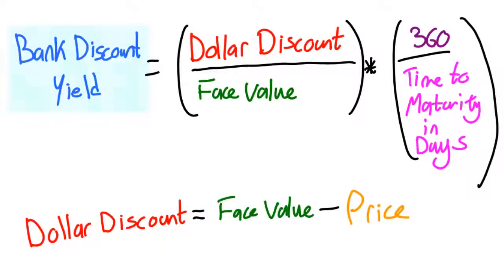Here are the basic two formulas. We have the bank discount yield which is equal to the dollar discount divided by the face value multiplied by 360 divided by the time to maturity in days of the financial instrument. The dollar discount itself is equal to the face value minus the price. We'll talk about all of these terms in a minute or two.